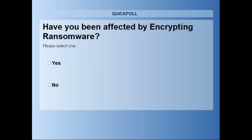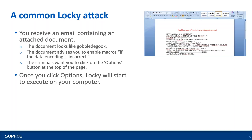An important point: Locky also encrypts files on network shares. It also detects the shadow copy of the machine. So the victim cannot even restore the files through Windows Restoration. That is the attack Locky carries out.